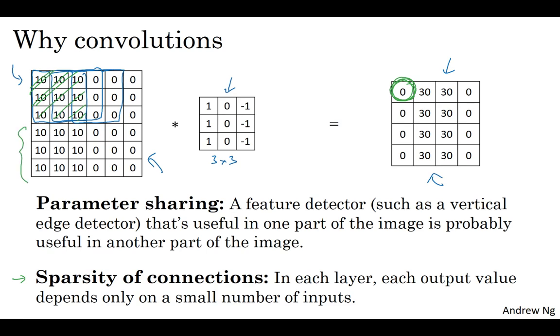the rest of these pixel values, all of these pixel values, all of these pixel values do not have any input on this, do not have any effect on that output. So that's what I mean by sparsity of connections.